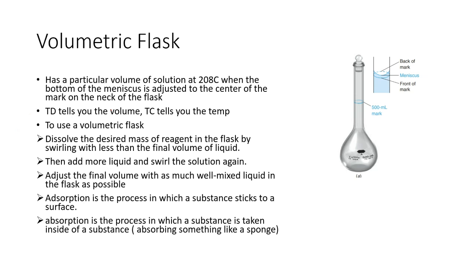To use a volumetric flask, dissolve the desired mass of reagent by swirling with less than the final volume of liquid. Then add more liquid and swirl the solution again. Adjust the final volume with as much well-mixed liquid in the flask as possible.